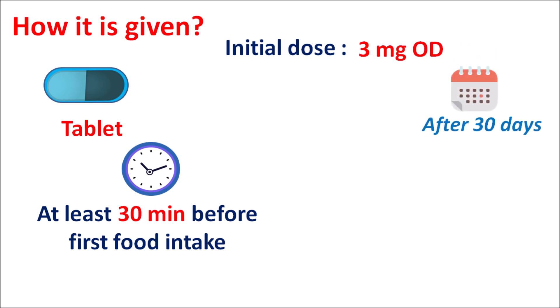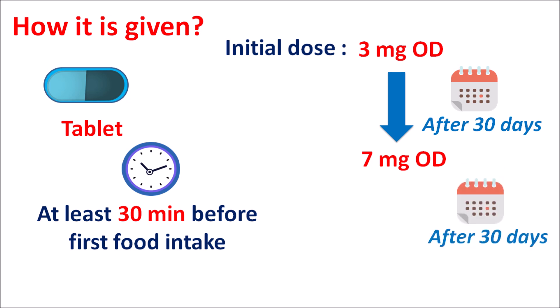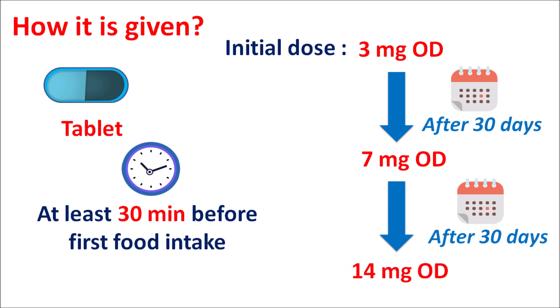The oral tablet is given at an initial dose of 3 mg once daily. After 30 days of treatment, the dose can be slightly increased to 7 mg once daily. Based on the efficacy of the treatment, a further dose increment can be made after another 30 days, increasing up to a maximum dose of 14 mg once daily to control blood glucose levels.